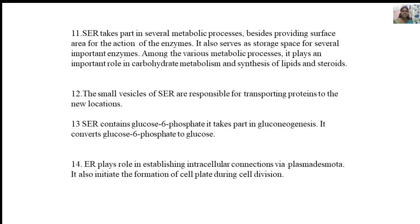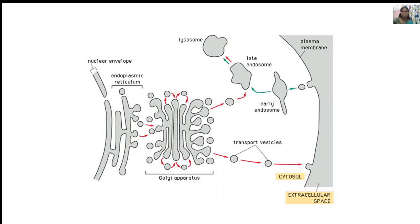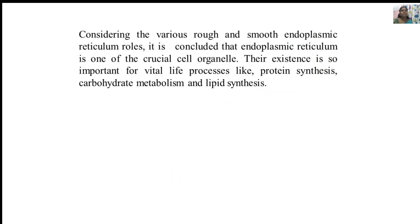The endoplasmic reticulum plays a role in establishing intracellular connections via plasmodesmata and initiates the formation of the cell wall during cell division. Proteins are packed in the form of vesicles; primary lysosomes are formed and, after pinching off from Golgi bodies, they form mature lysosomes. Other proteins with functions in the cell membrane or plasma membrane move towards the plasma membrane.